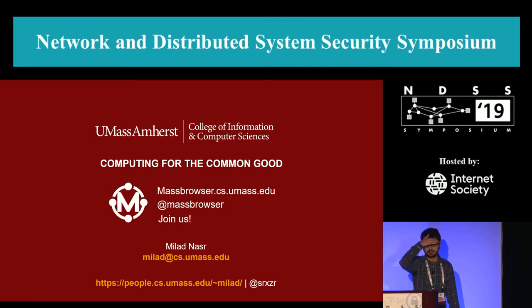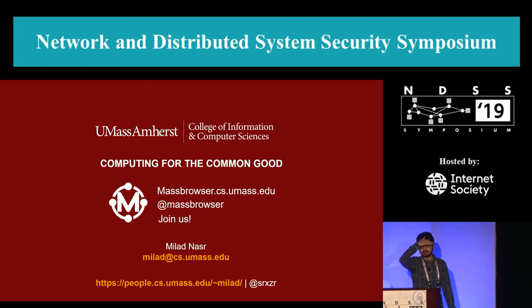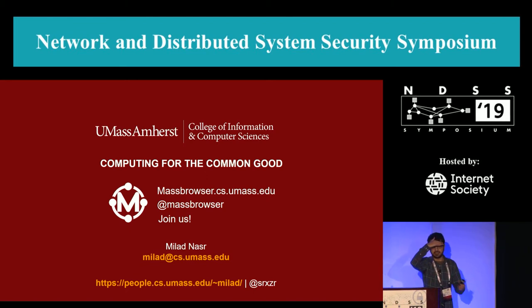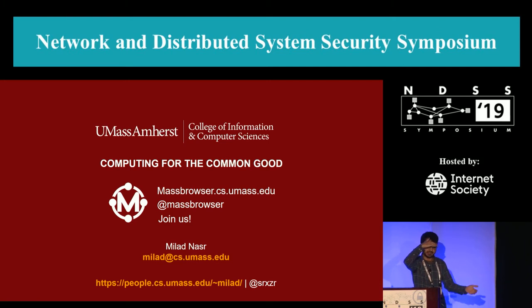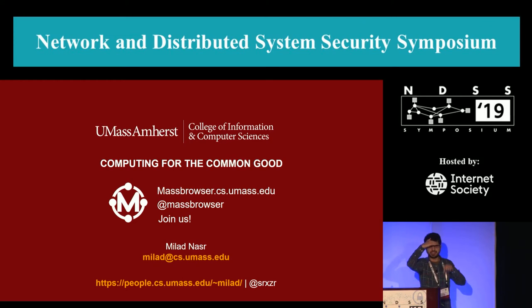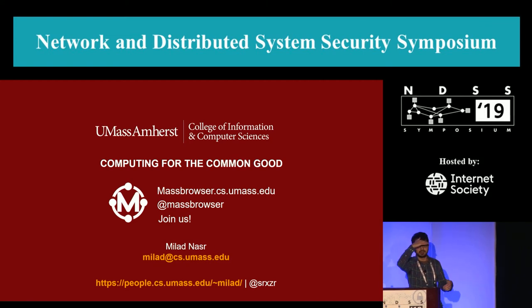Question from Burak, UC Santa Barbara: Did you construct the utility function by hand? Response: We argue in the paper that utility functions are pretty generic and you can use any utility function, but for these experiments we came up with a set of common metrics across censorship circumvention tools and used a linear combination of those, comparing different weights in our experiments to show the effect on the results.